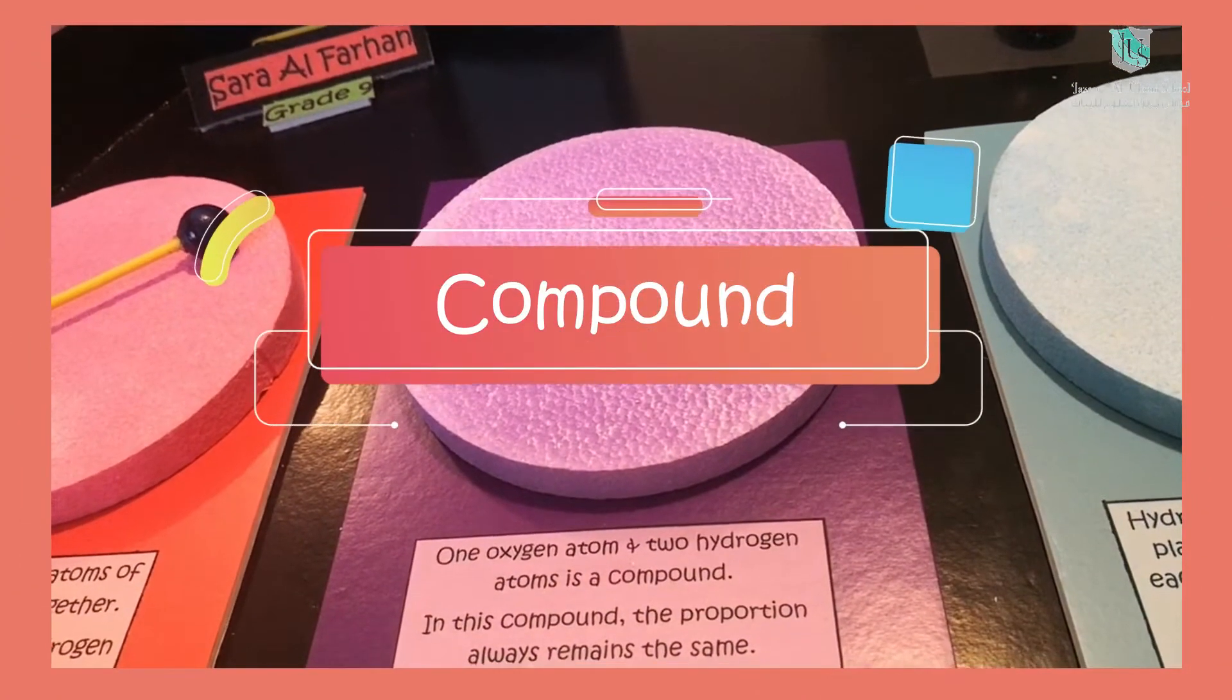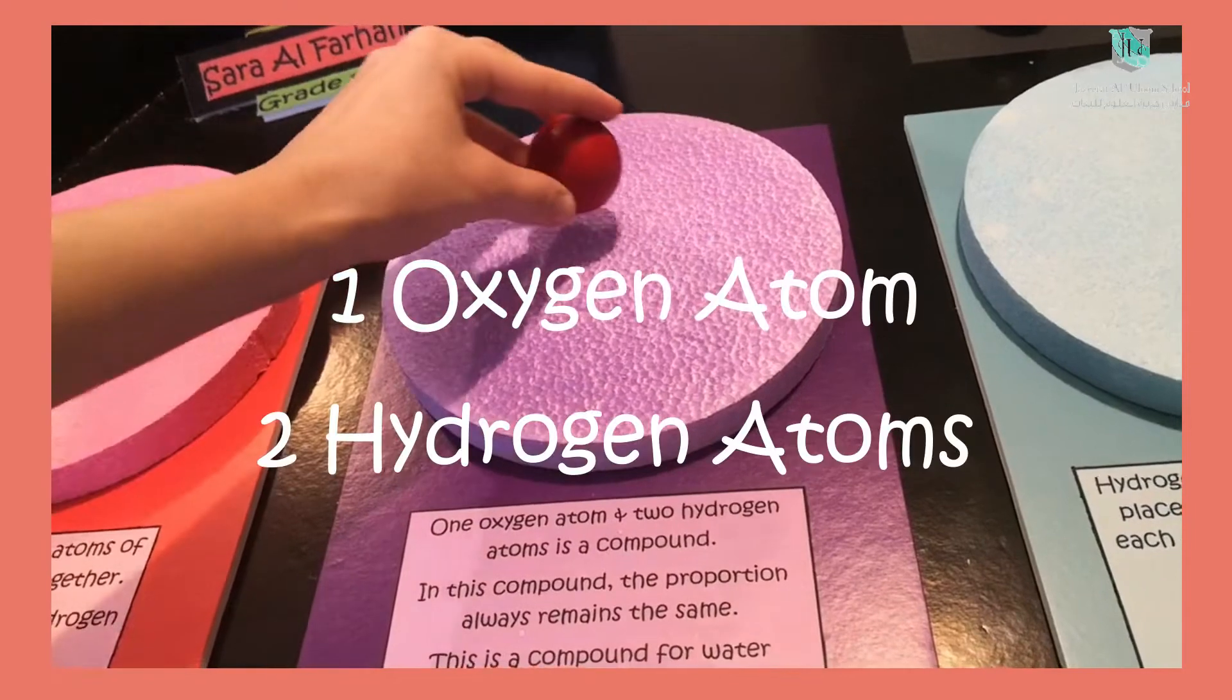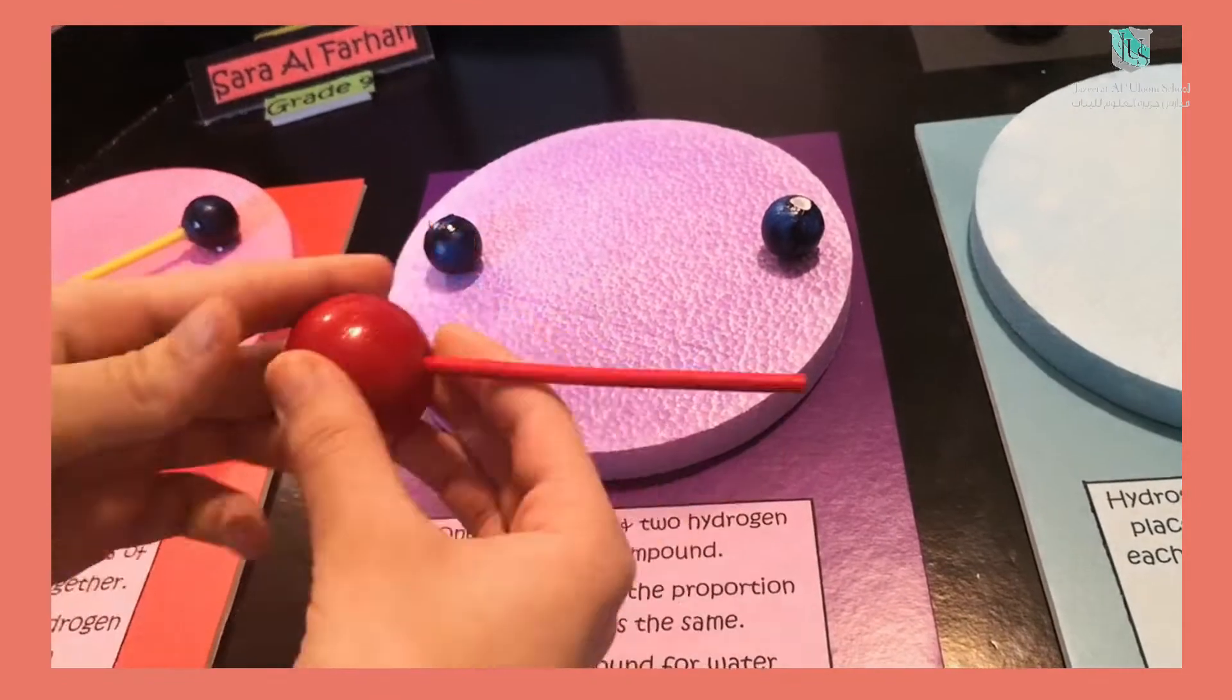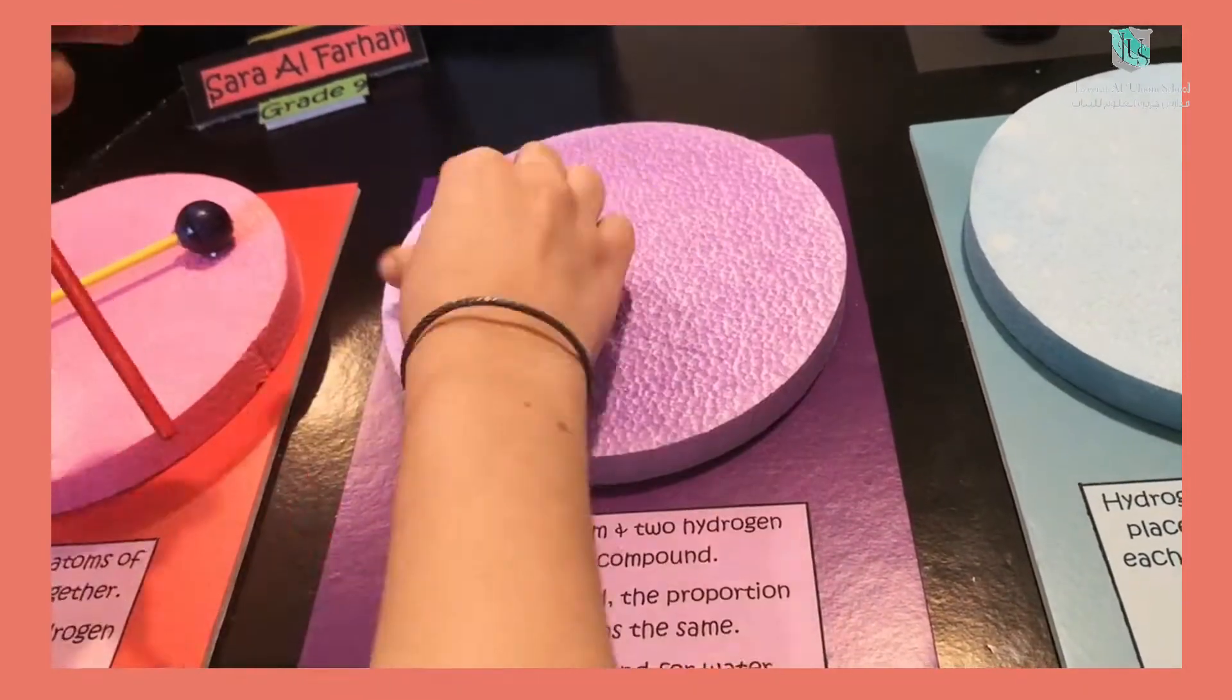Now I will show you a compound. You can see I have one oxygen atom and two hydrogen atoms which are bound to each other by a chemical reaction. So this is a compound.